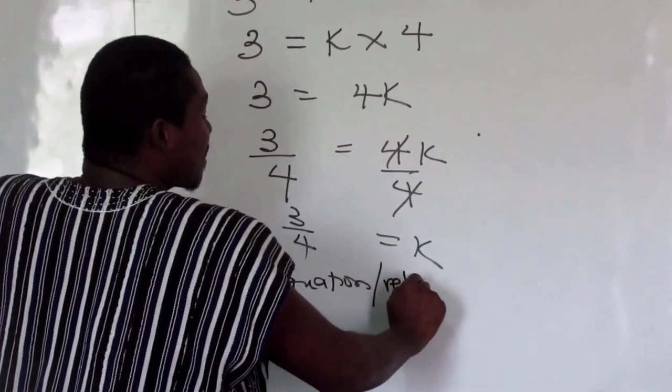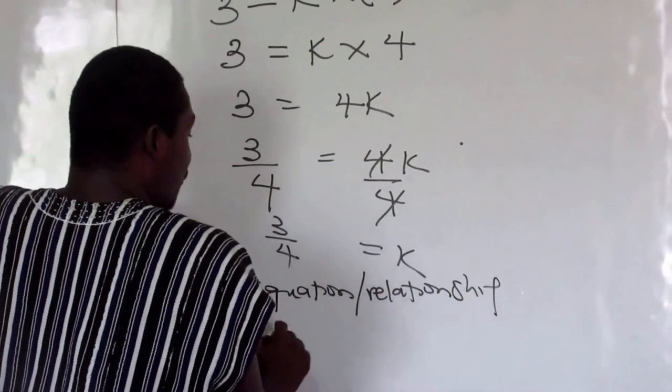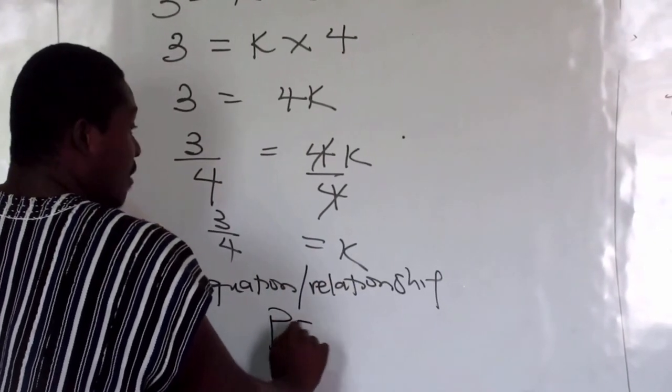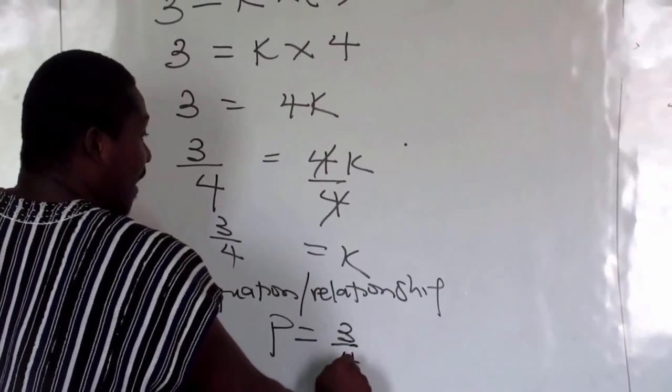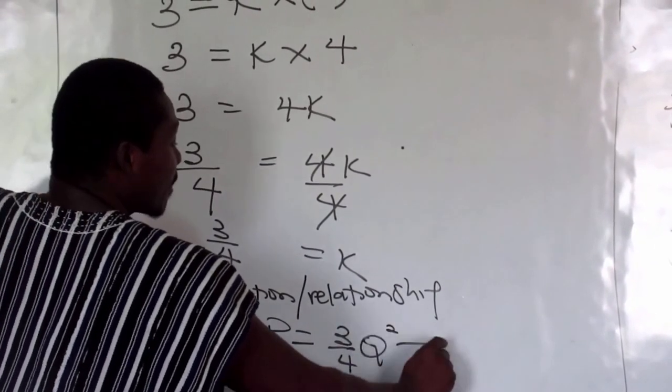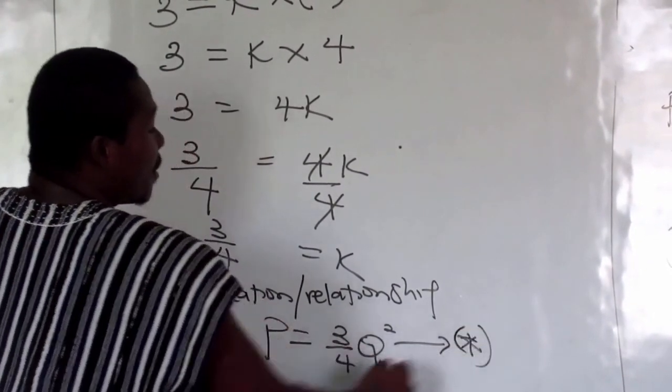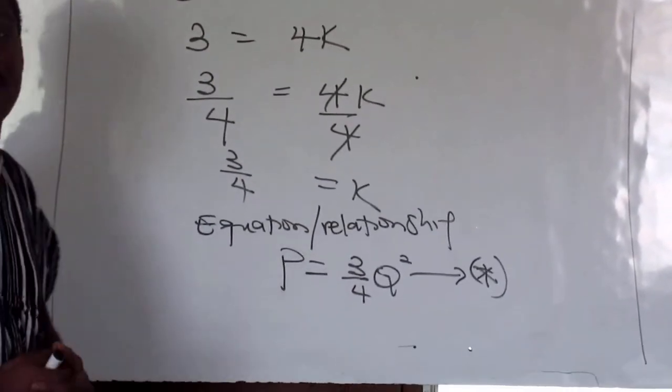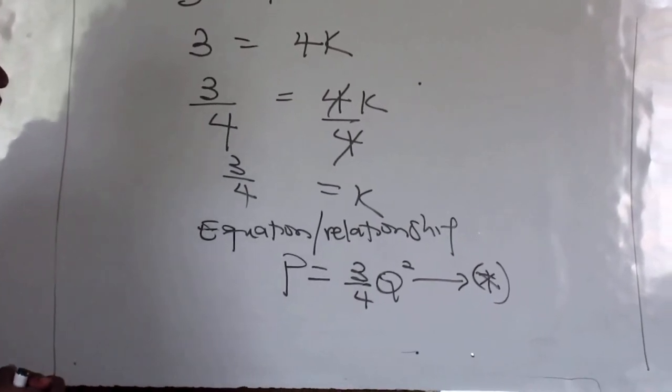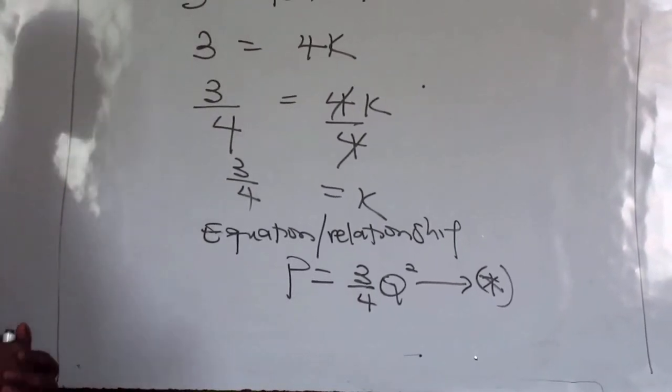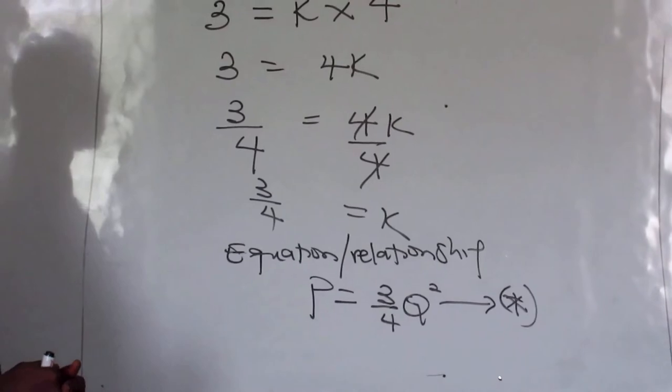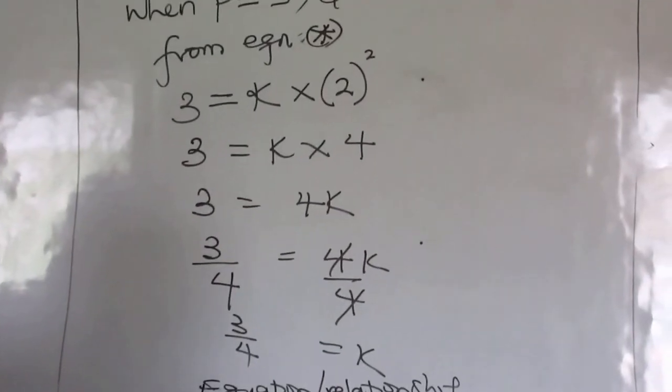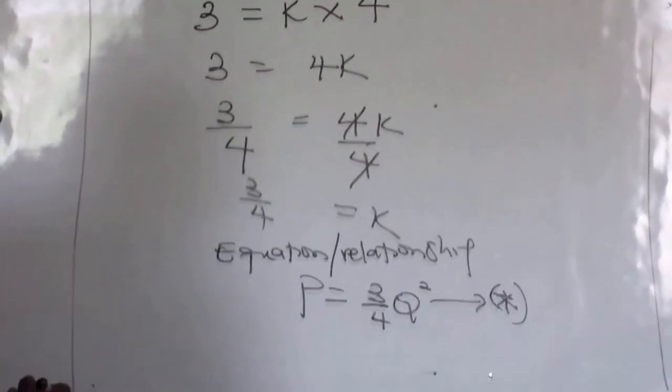So that is k. Good, so that equation or the expression will be reduced to this. So equation or relationship between Q is written as: P equals three-fourths Q squared. So sometimes they can ask you, write the relation or write the expression or the equation linking P and Q.